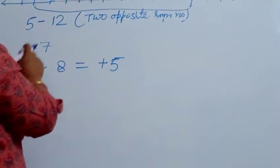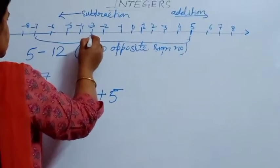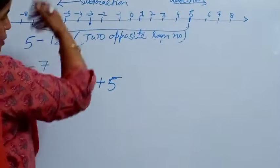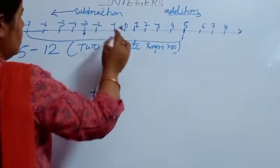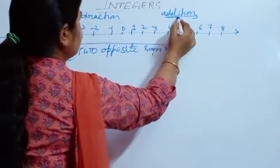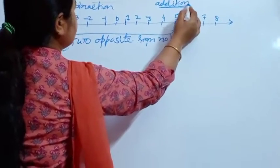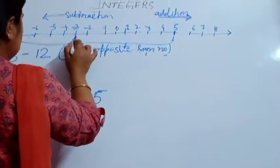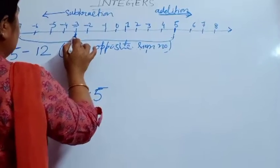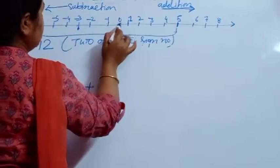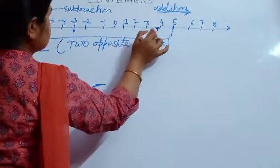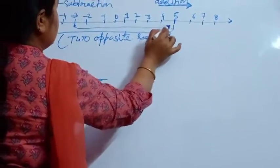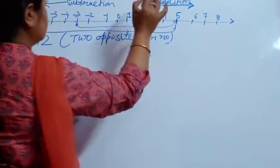Now stand on minus 3. Here minus 3 is there. Plus 8 — for addition, we will move in the forward direction. I made an arrow here, you can understand from there. Stand on minus 3 and count 8: 1, 2, 3, 4, 5, 6, 7, 8. The value is 5. In this way you can get the result.